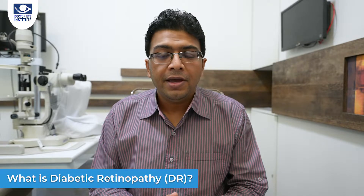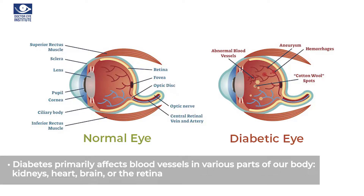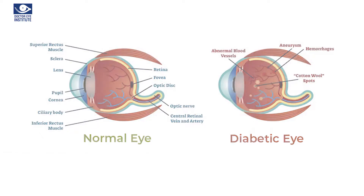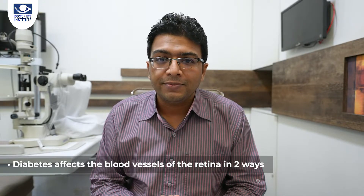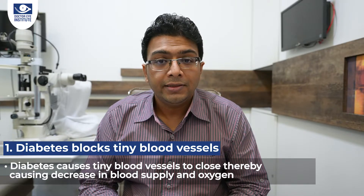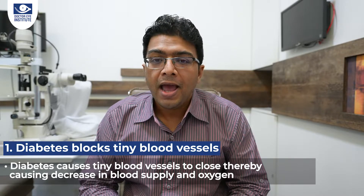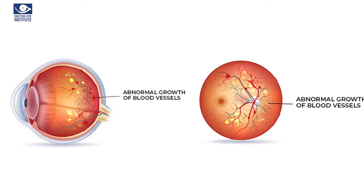Diabetic retinopathy refers to several changes caused in the human retina by diabetes. As you know, diabetes primarily affects the blood vessels in various parts of the body, including the heart, the brain, the kidneys and even the retina. In the human retina, diabetes affects the blood vessels in two ways. Firstly, it causes the tiny blood vessels of the human retina to close down, thereby causing a decrease in the blood supply and hence the oxygen supply to the retinal cells. The human retina responds to this by secretion of chemicals called growth factors, which cause the formation of new blood vessels on the surface of the retina.